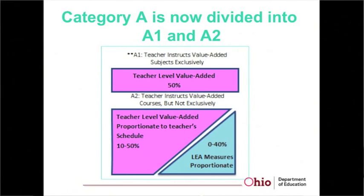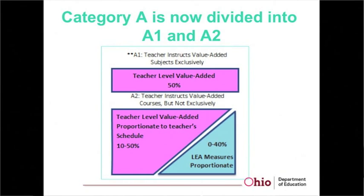Feel free to ask questions as we go along. With House Bill 555, Category A became divided into two categories: A1 and A2. A1 are teachers who instruct value-added courses exclusively — for example, a fourth grade reading teacher who teaches reading all day long. A2 are those teachers who instruct value-added courses but not exclusively. For example, a fourth grade teacher who instructs reading for part of the day and social studies for part of the day would be considered A2.